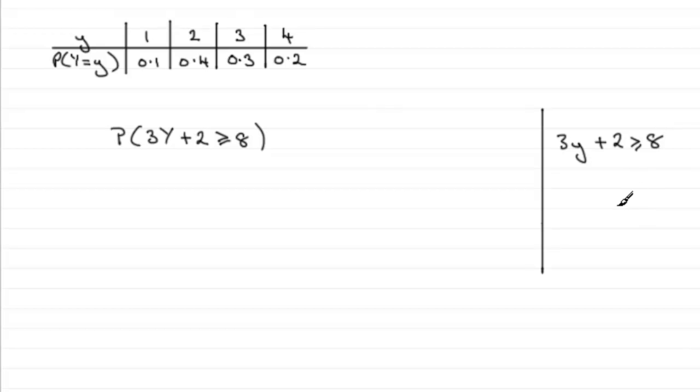We just take 2 from both sides, and we've got 3y is greater than or equal to 6. If we divide both sides by 3, y has got to be greater than or equal to 2.